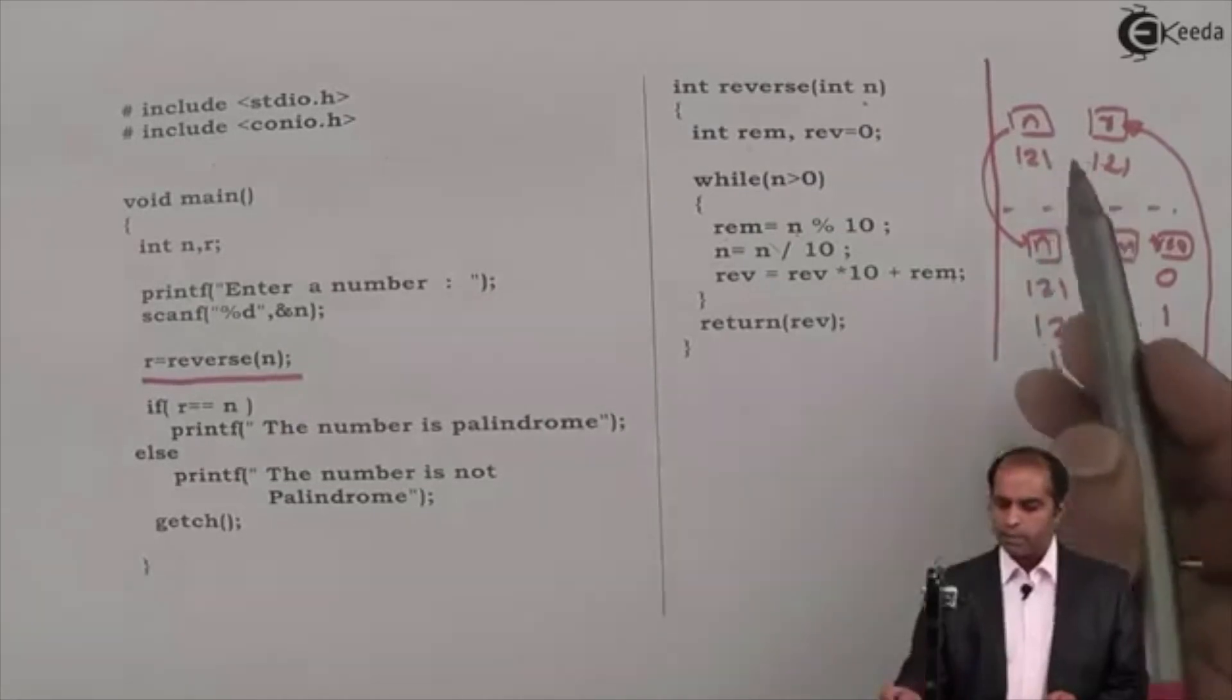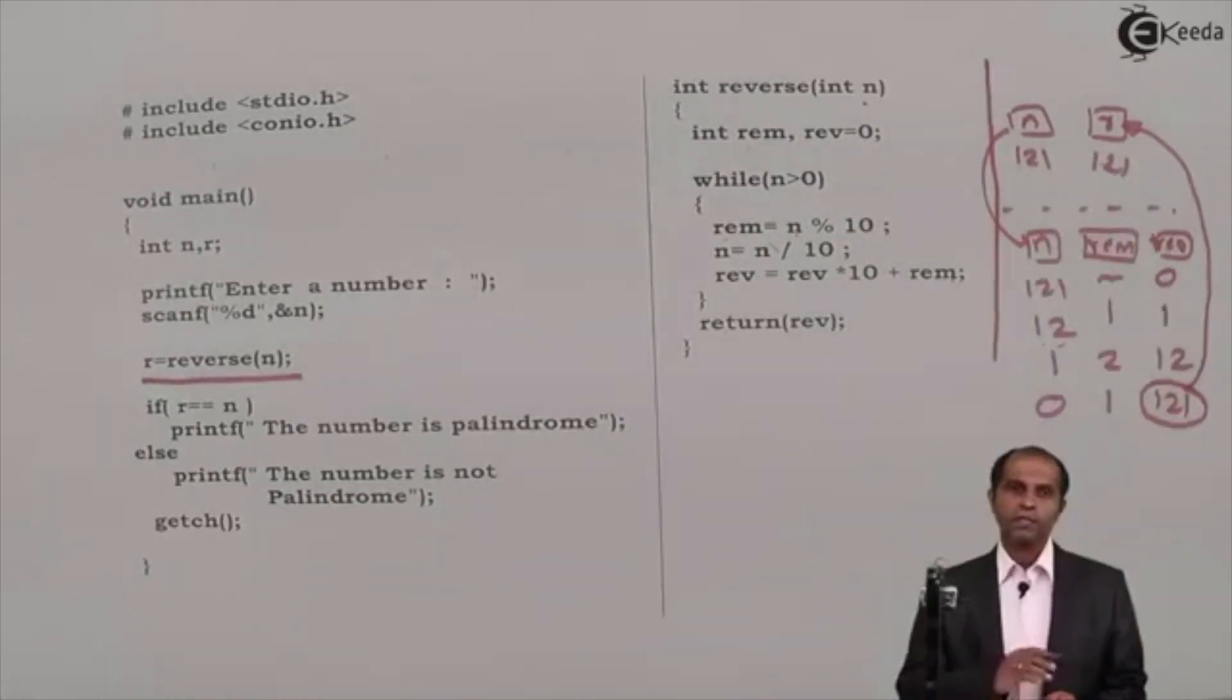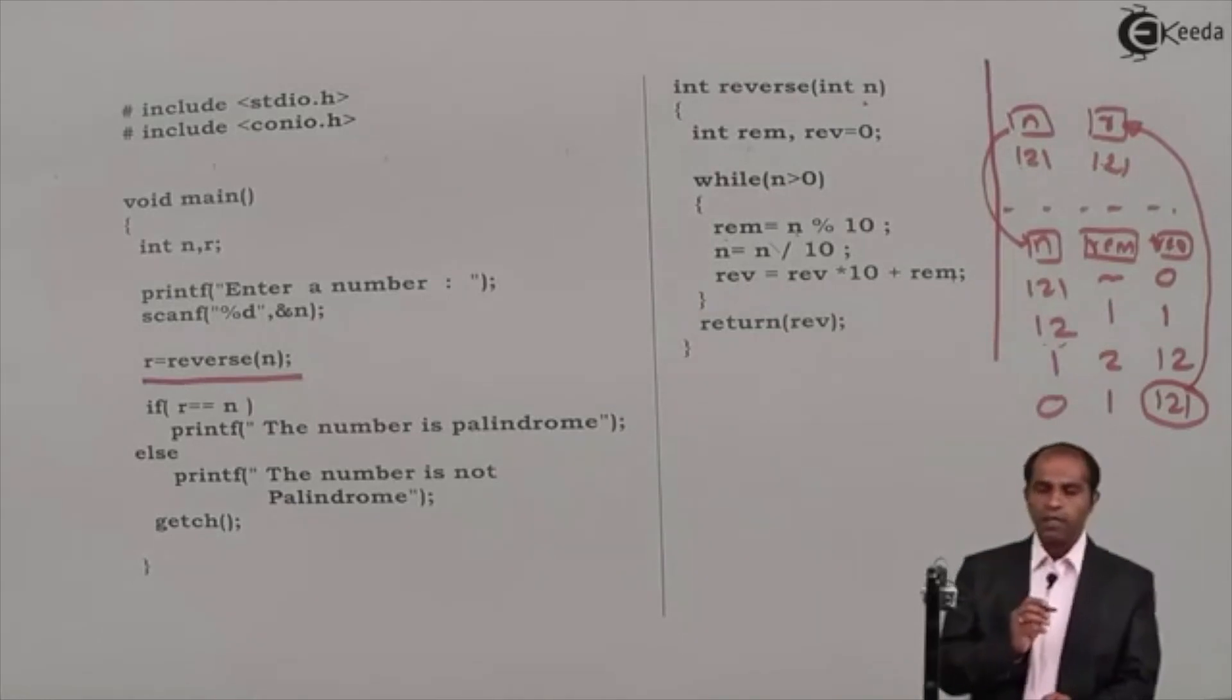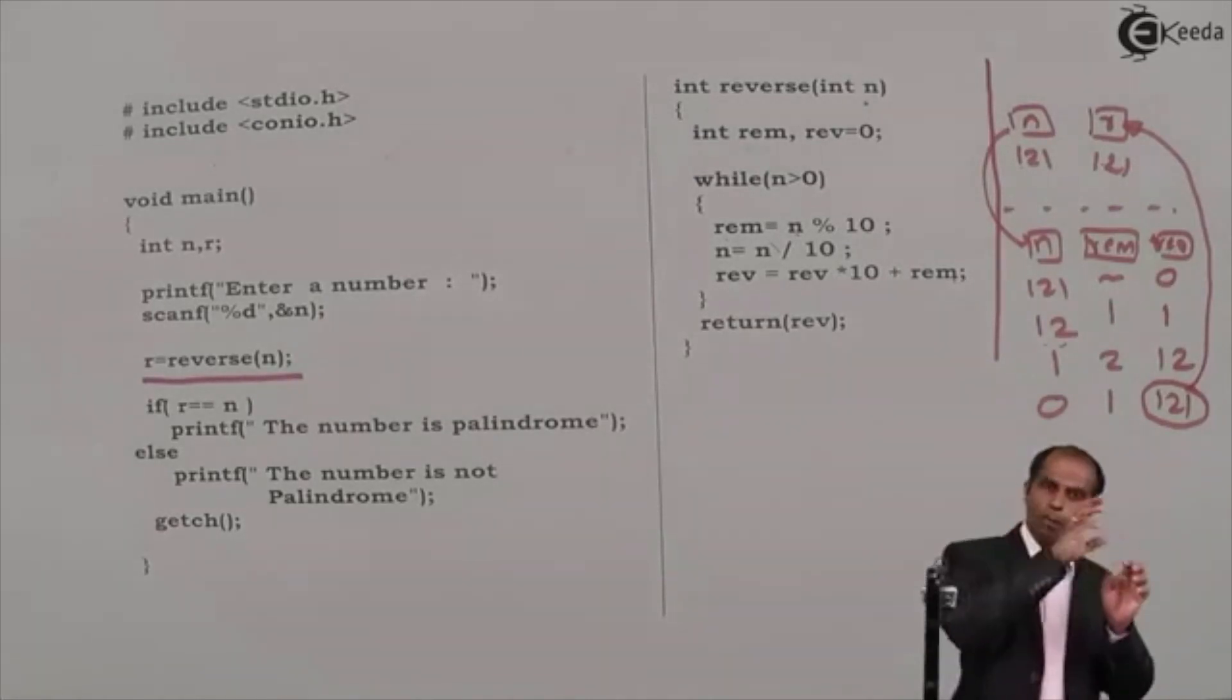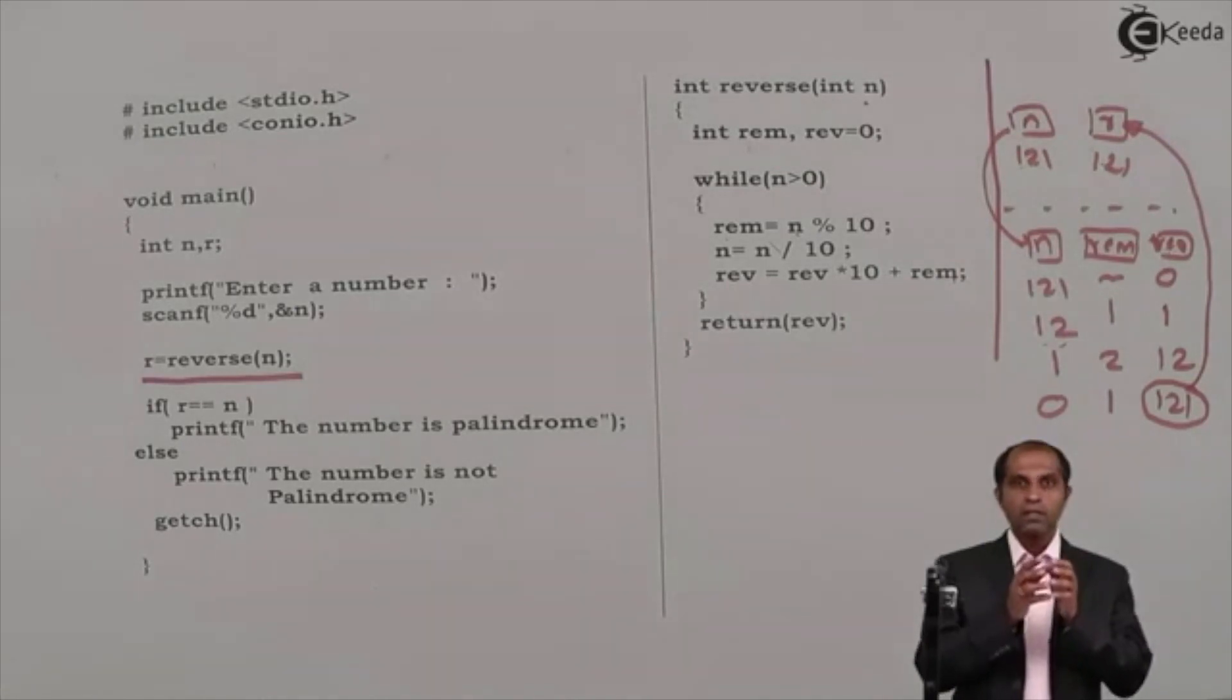If you take some other example, you will find that the reverse does not match with n. Hence we conclude that the number n at this place does not get modified. If you remember the program which we did in while, there the value n was copied at some place and then the copied value is compared. But here there is no necessity of any copy. Why there is no necessity of any copy?